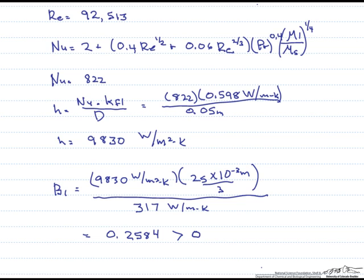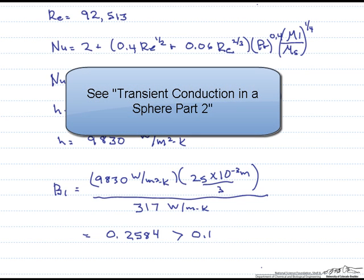The Biot number of 0.2584 is larger than 0.1, so we need to use an analytical solution. Note that in previous transient problems we were given h directly. Here, we use our knowledge of Nusselt number correlations along with the geometry and properties of the situation to find h for ourselves.